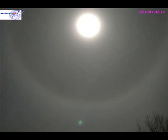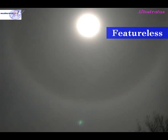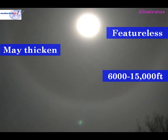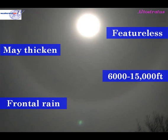Alto stratus cloud often occurs during a warm front. It forms after the cirrus cloud as the cloud gradually lowers. Generally alto stratus cloud is featureless. It may thicken up, particularly if it is associated with a warm front. Generally the cloud occurs between about 6 and 15,000 feet. If that cloud is thickening then it may bring some rain, especially if it is associated with a frontal system.